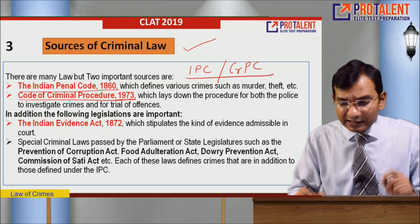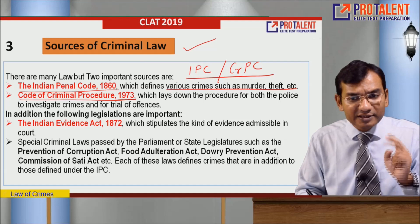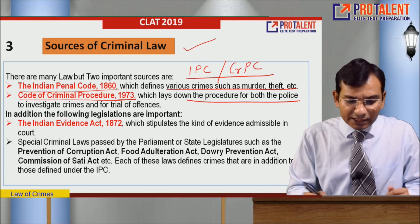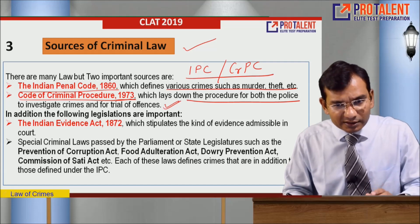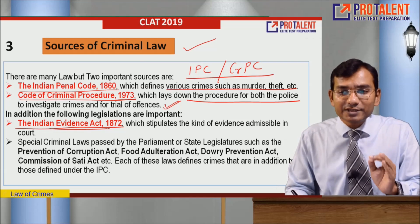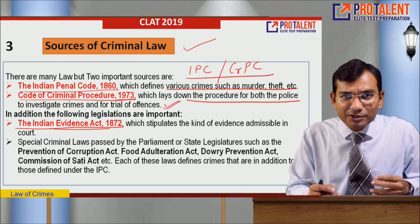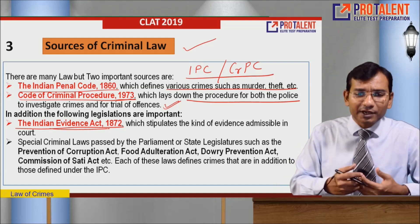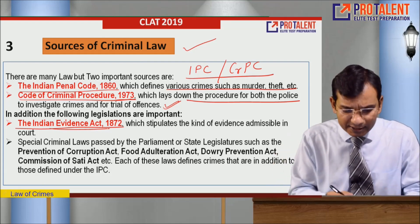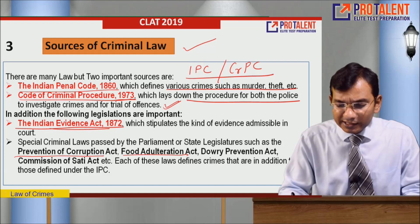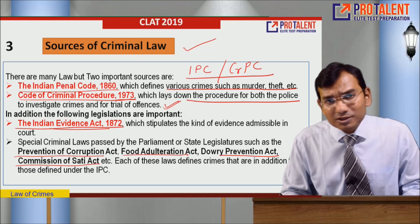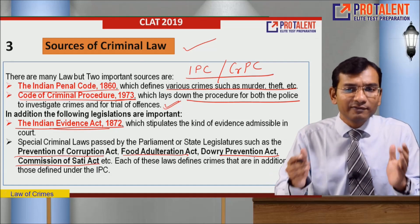Besides IPC and CRPC, there are few other important legislations. The Indian Evidence Act specifies what types of evidence are admissible in court. There are also special criminal laws passed by Parliament and state legislatures from time to time, such as the Prevention of Corruption Act, Food Adulteration Act, Dowry Prevention Act, and Commission of Sati Act. These are the kinds of laws available under criminal law.